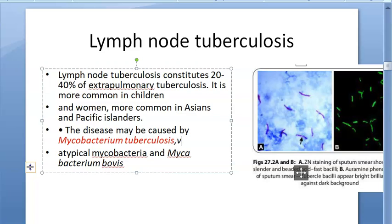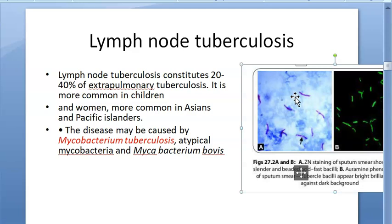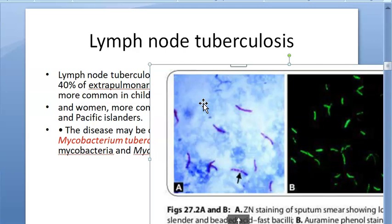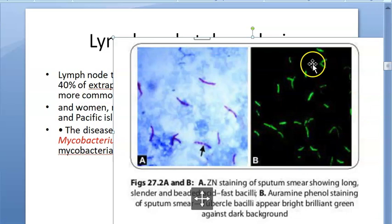Mycobacterium tuberculosis is actually a gram-positive organism, but the stain used is acid-fast staining — the Ziehl-Neelsen technique. Here you can see the organisms appearing pink; they are resistant to acid decolorization, so these are acid-fast bacilli. They can also be seen with formine phenol staining as brilliant bright green against a dark background.